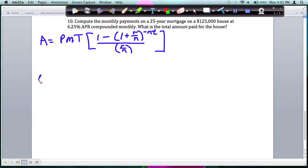We know we're paying off a $125,000 house, and we're trying to find the payment. 1 minus our interest rate is 6.25%, which is 0.0625 as a decimal, divided by 12 because it's compounded monthly, raised to the negative 12 times 25 for 25 years, divided by 0.0625 divided by 12.